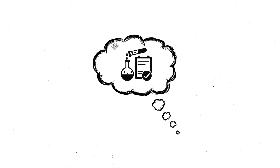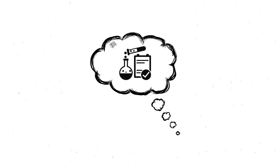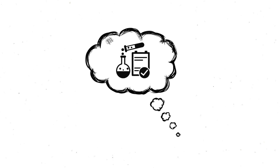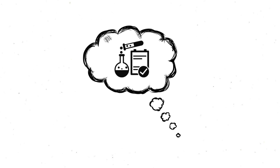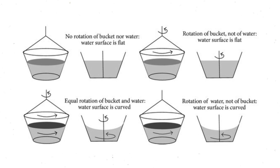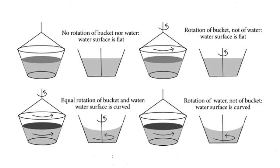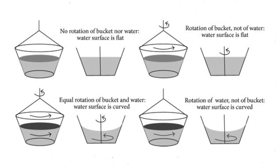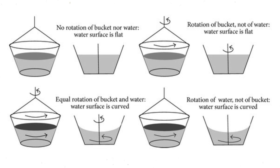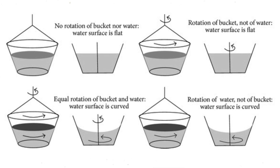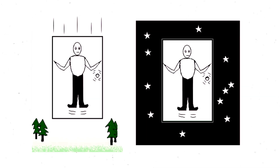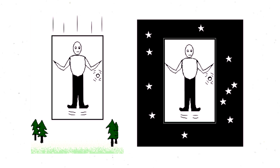Thought experiments have deeply influenced the progress in understanding of gravity. Examples are Newton's rotating bucket of water — although Newton wrote he actually performed the experiment — by which he justified absolute space, and Einstein's free-fall experiment, by which he justified the equivalence principle.